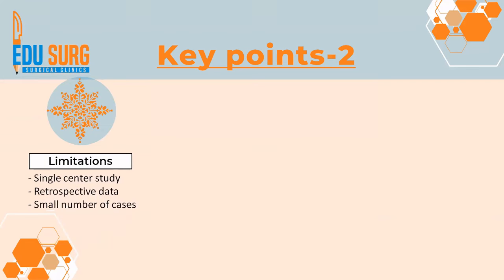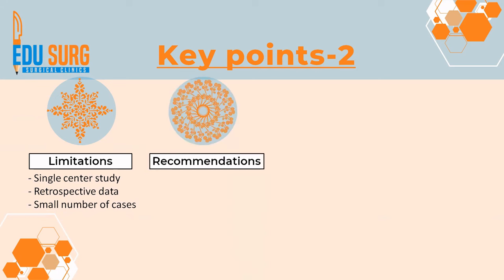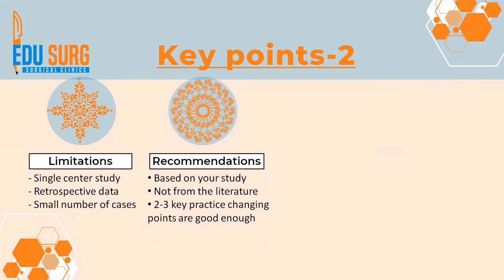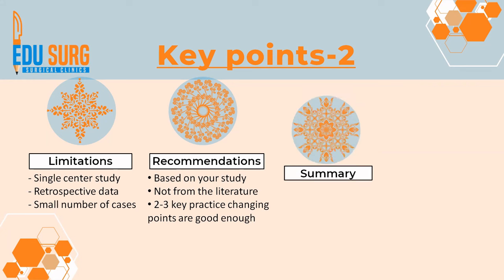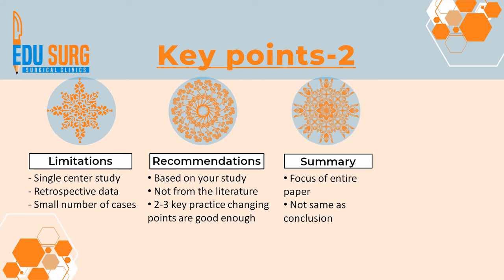A very important point in discussion is limitations of the study. Don't feel sad that your study has limitations — all studies have limitations at some point. Some common limitations when doing new original articles are: single center study, most data is retrospective, and small number of cases. Another important component is recommendations. Remember that recommendations have to be based on your study — it is the findings of your study which give you recommendations. Two to three key practice-changing recommendations are more than enough. A summary of the article is very important; if you started with a results summary, this summary part can be skipped.